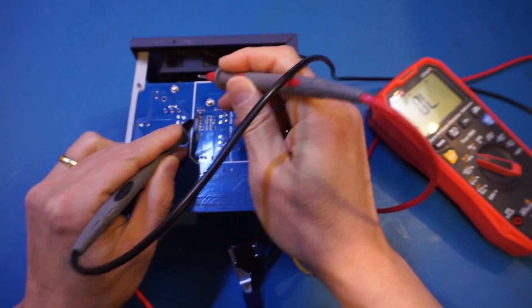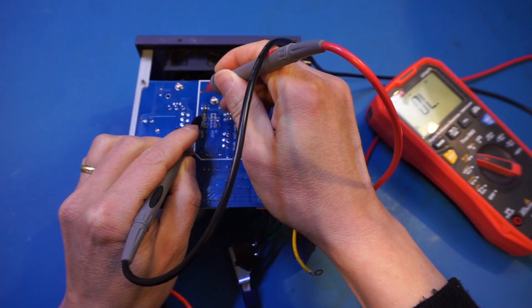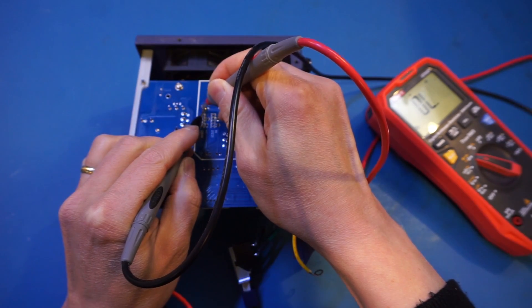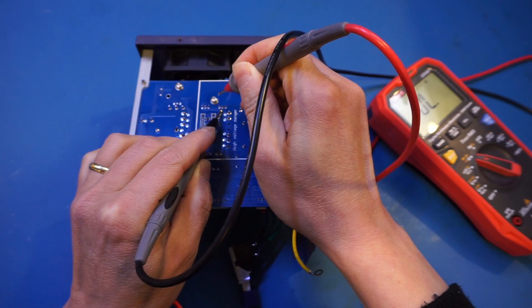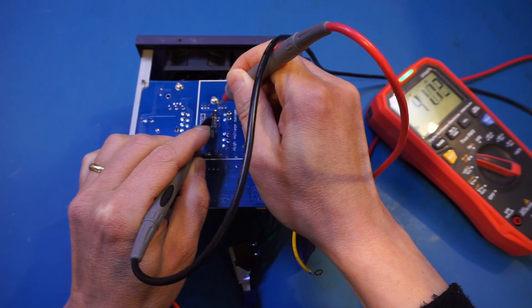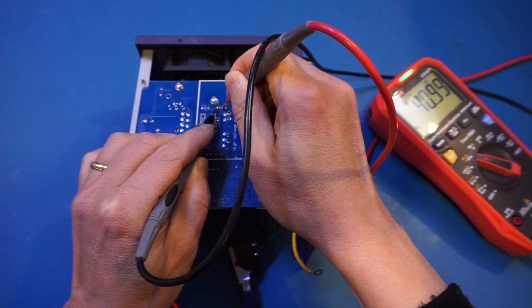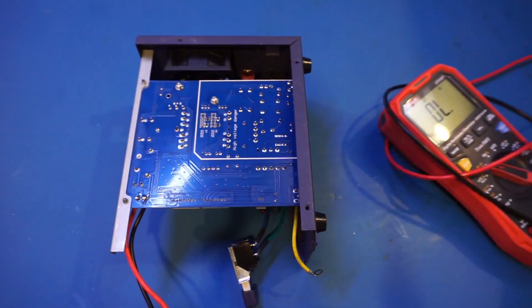And yep, this one is shorted between the drain and source. How about the other MOSFET? Yep, you can see that both are shot. So I'll have to replace them.